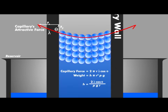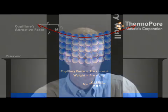This formula predicts that the capillary height of a system will increase when: 1. the surface tension of the liquid increases; 2. the contact angle approaches 0; 3. the density of the fluid decreases; and/or 4. the capillary's radius decreases.